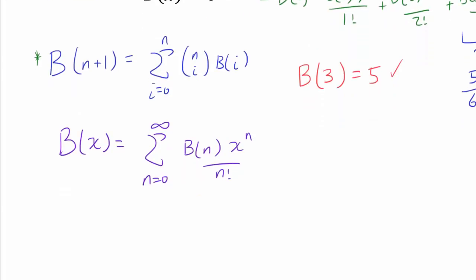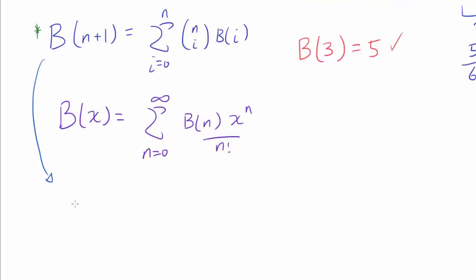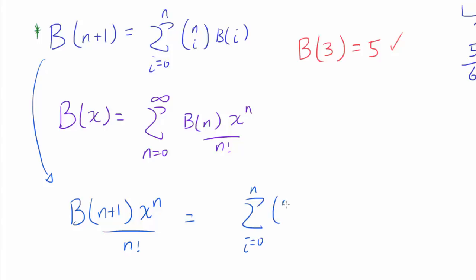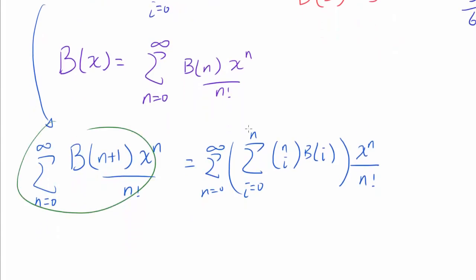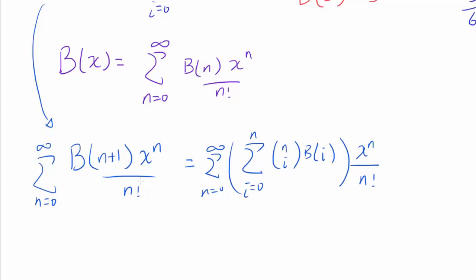From the recurrence relation, we are going to multiply — this is a common technique when working with generating functions — by x to the n and divide by n factorial. On the right side we have a summation from i equals 0 to n of n-choose-i times b(i), and we multiply this entire thing by x to the n over n factorial, then sum from n equals 0 to infinity. As we are about to find out, both sides have an intimate connection to the exponential generating function b(x). The left-hand side is b prime of x.